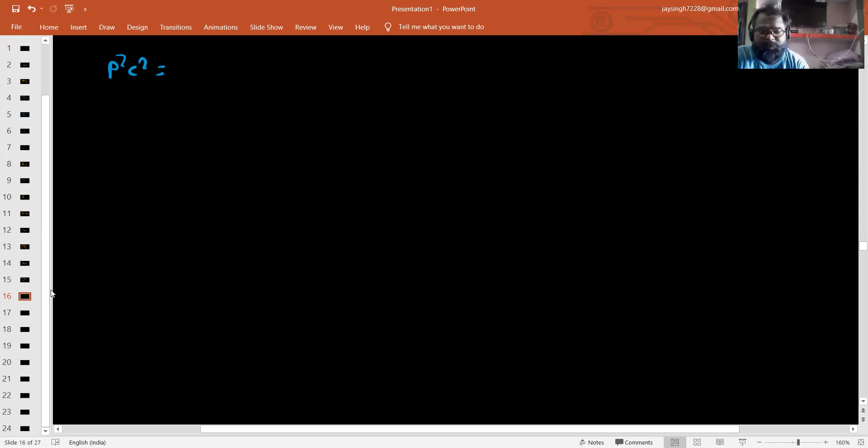P²c² equals K² plus 2m₀Kc². If P² equals K² plus 2m₀Kc² divided by c², then P equals the square root of K² plus 2m₀Kc² divided by c².